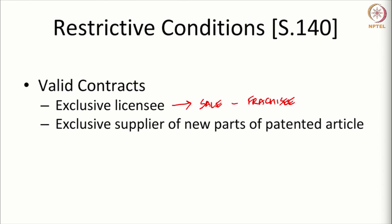Second, it will be valid to have a clause which allows an exclusive supplier to supply new parts of the patented article. The right to supply new parts of a patented article, or the right to repair a patented article, can be reserved, and if such a right is reserved, it is valid and will not be treated as a restrictive condition.